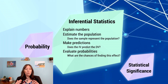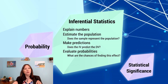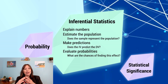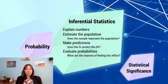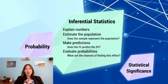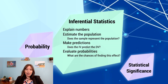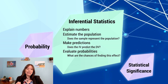With inferential statistics, we're interested in explaining the numbers — moving past just describing them. Some ways inferential statistics help is through estimating the population. We only have numbers for our sample, but we can estimate if these are representative of the population. We can also use inferential statistics to make predictions: does the independent variable actually predict the dependent variable? This builds on correlations but goes a step further.